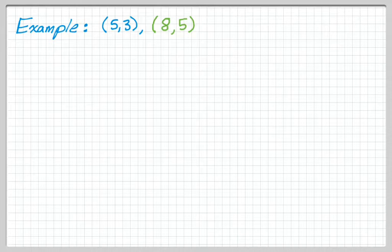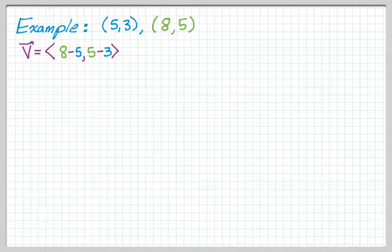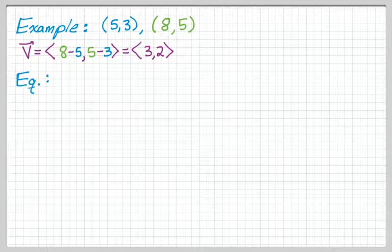So let's do an example. And the example is we have a line that goes through 5, 3, and 8, 5. So we calculate our direction vector, which gives us 3, 2. And then we can just write the equation of the line.